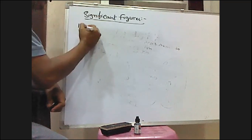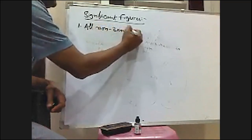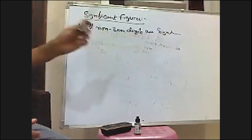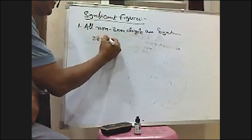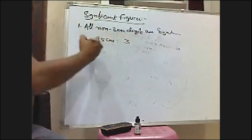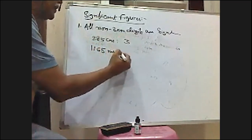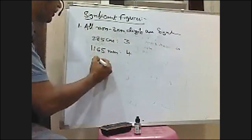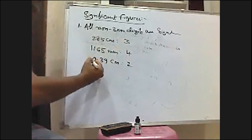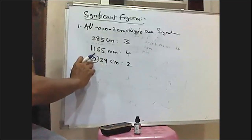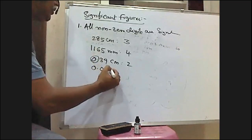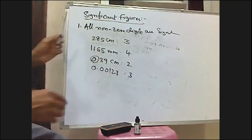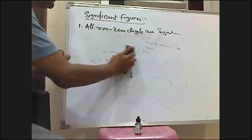To calculate the number of significant figures, there are certain rules we have to follow. The first rule is: all non-zero digits are significant. For example, if I say 285, the number of significant figures is 3. If I say 1165 mm, the number of significant figures is 4. For example, if I write 0.39, the number of significant figures is 2, because the zero is not a non-zero digit so it is not significant. If I write 0.00123, the number of significant figures is 3.